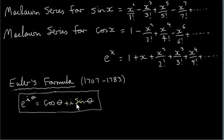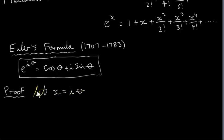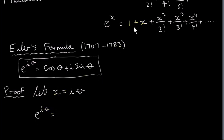First of all, I want to prove this result before I use it. What Euler basically did was let x equal i times theta in the series expansion for e to the power of x. So he just assumed that you could do this — you could plug i theta in for x.